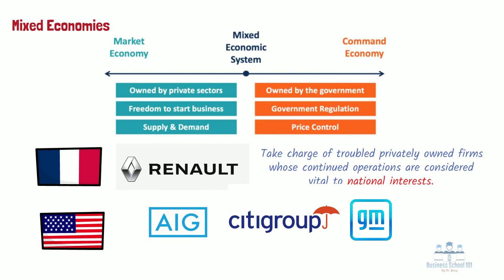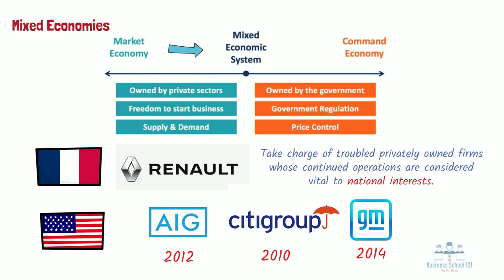The U.S. government sold its stakes in Citigroup, AIG, and GM in 2010, 2012, and 2014 respectively. A mixed economy can emerge when a government intervenes to disrupt a market economy by introducing state-owned enterprises, regulations, subsidies, tariffs, and tax policies. It can also emerge when a command economy makes exceptions to state ownership in order to capture economic benefits from private ownership and free market incentives. So a combination of free market principles like private contracting and socialist principles of state ownership or planning is common to all mixed economies.